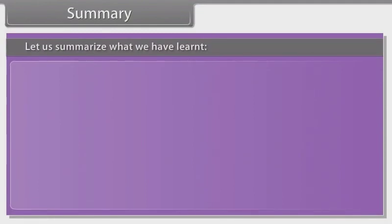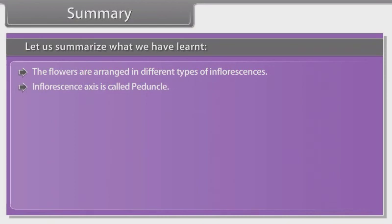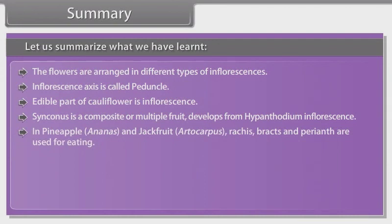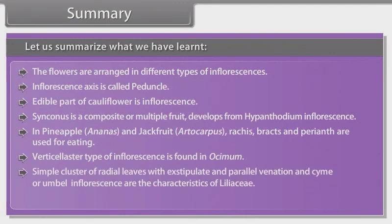Summary: The flowers are arranged in different types of inflorescences. The inflorescence axis is called peduncle. The edible part of cauliflower is inflorescence. Synanthium is a composite of multiple fruit that develops from hypanthodium inflorescence, as in pineapple (Ananas) and jackfruit (Artocarpus), where bracts and perianth are used for eating. Verticillaster type of inflorescence is found in Osmium. Simple cluster of radical leaves with exstipulate and parallel venation and cyme or umbel inflorescence are the characteristics of Liliaceae. In family Gramineae, the inflorescence is a spikelet.